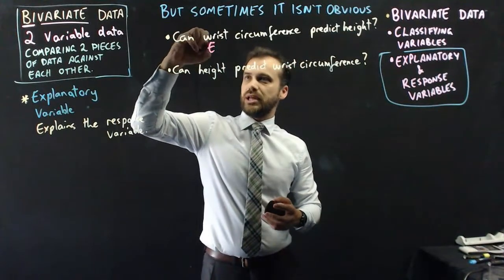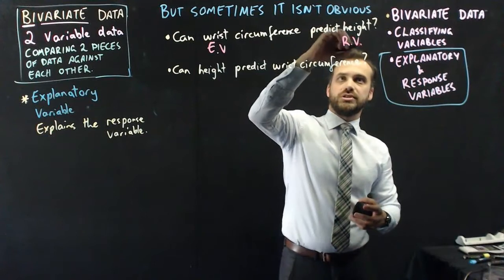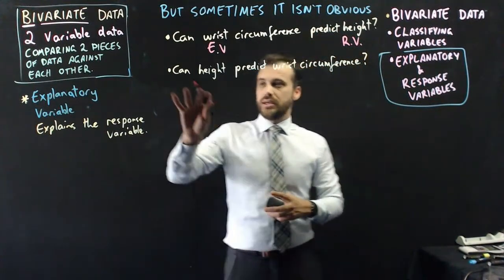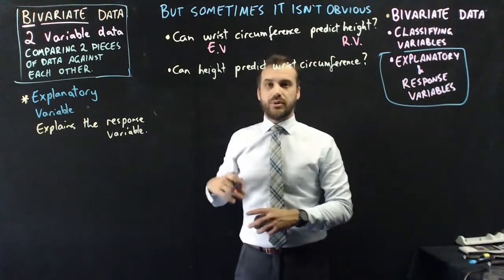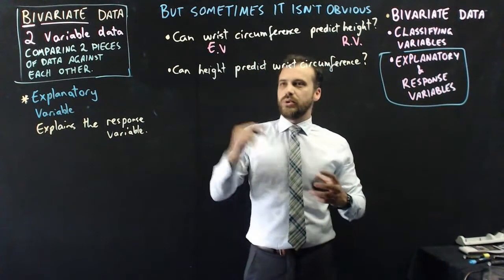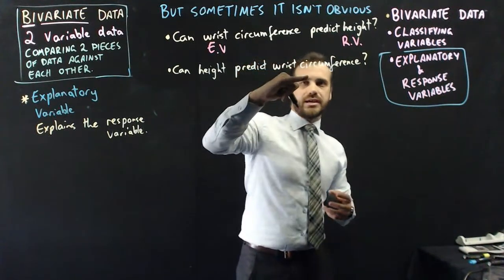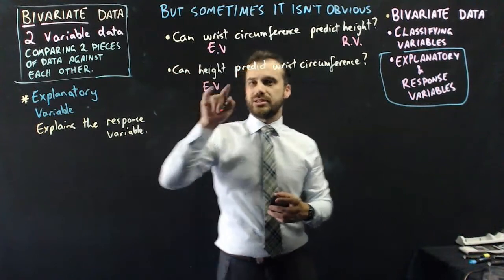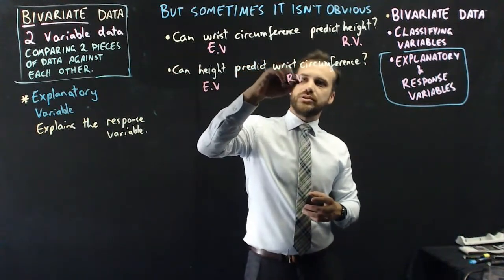Well, if I do that experiment and try to test that correlation, you can see wrist is predicting height. In other words, wrist is explaining height. So this is your explanatory variable and this is your response variable. But if I were to ask the question the other way, can height predict wrist circumference? Can I measure a person and say, well, you're 180 centimeters tall, so your wrist circumference is 20 centimeters, whatever it is. Well, in this case, we're saying, can height explain wrist circumference? So in this case, that one's going to be the explanatory variable and this one is going to be the response variable.